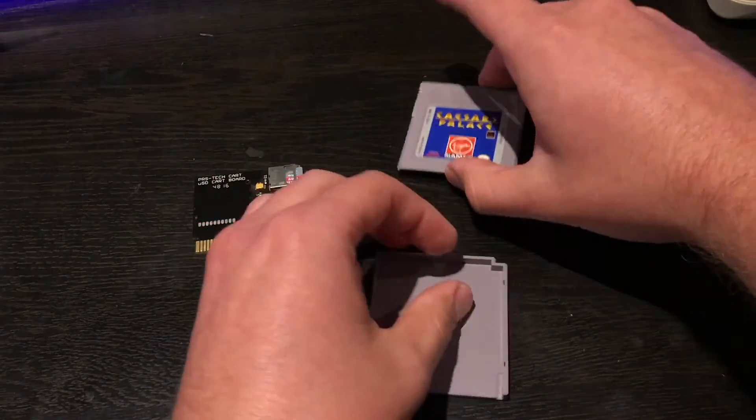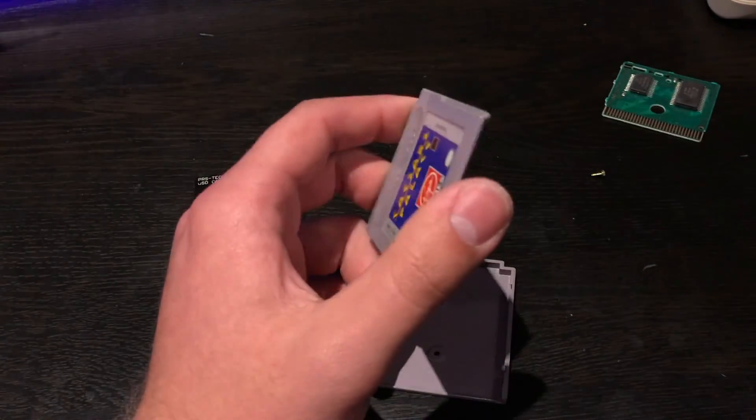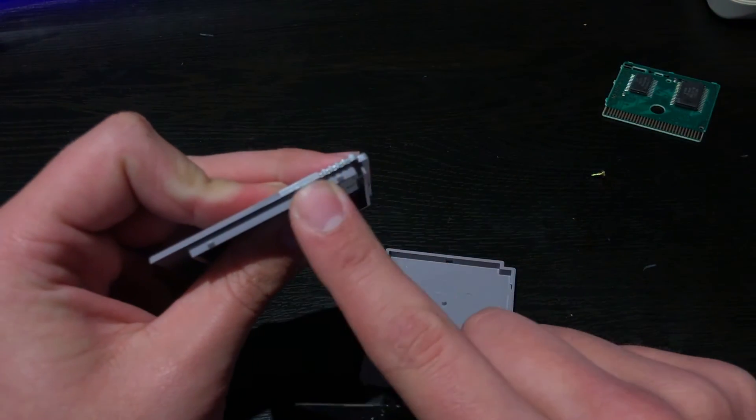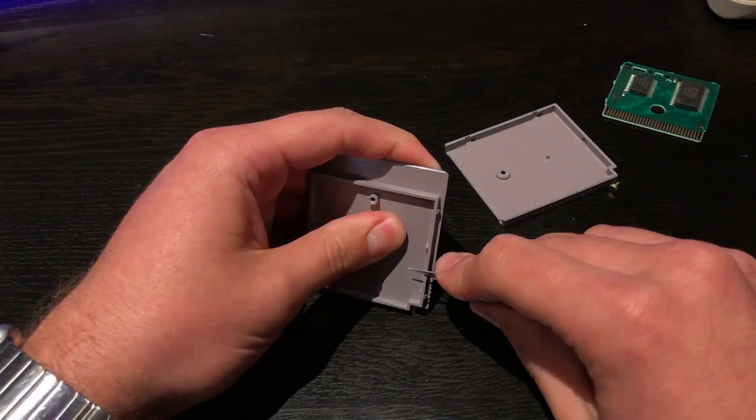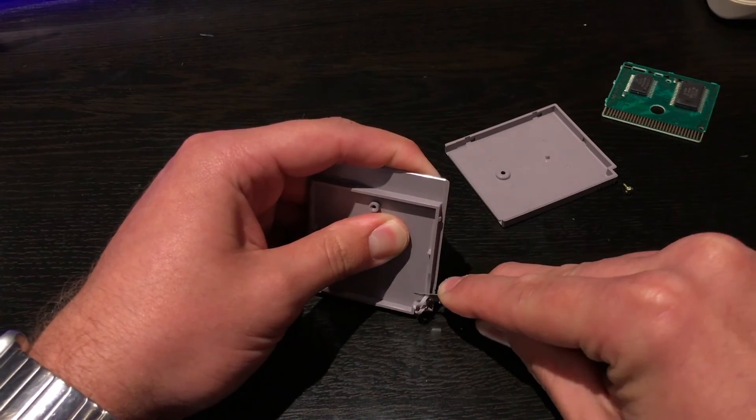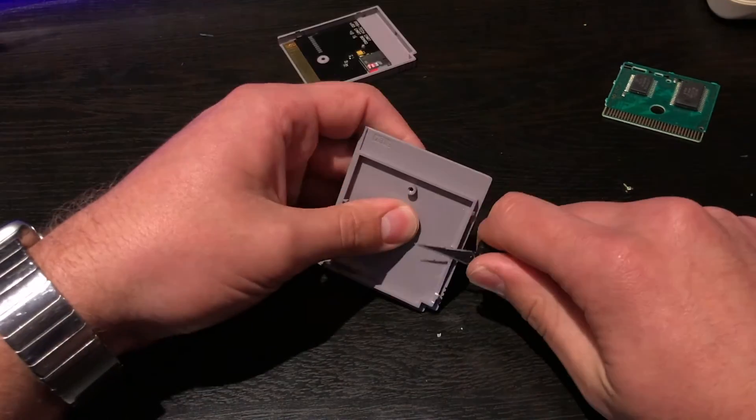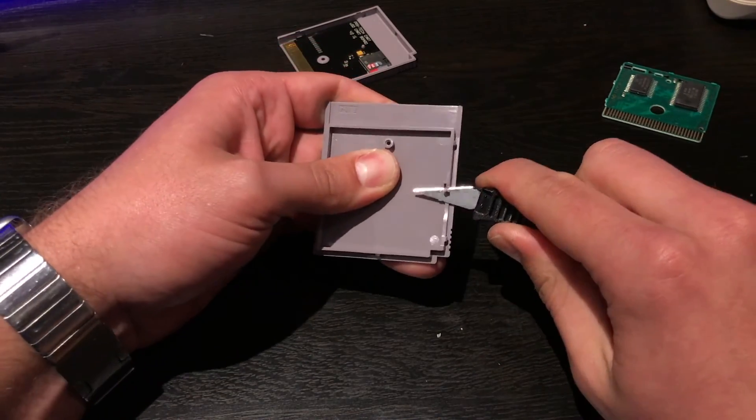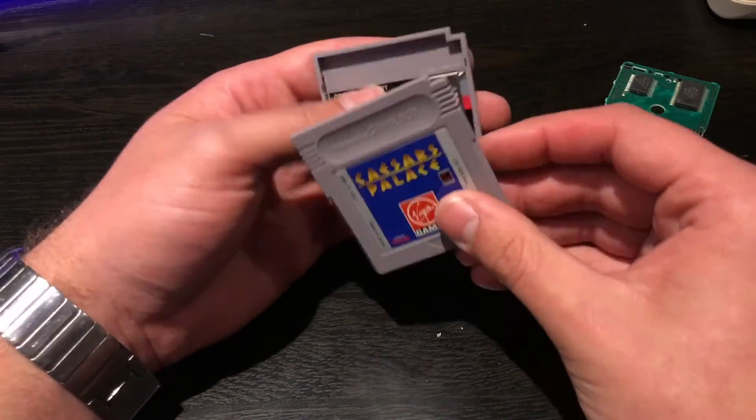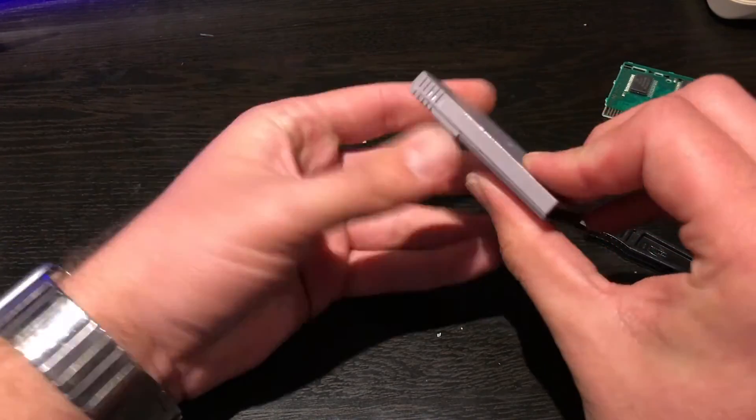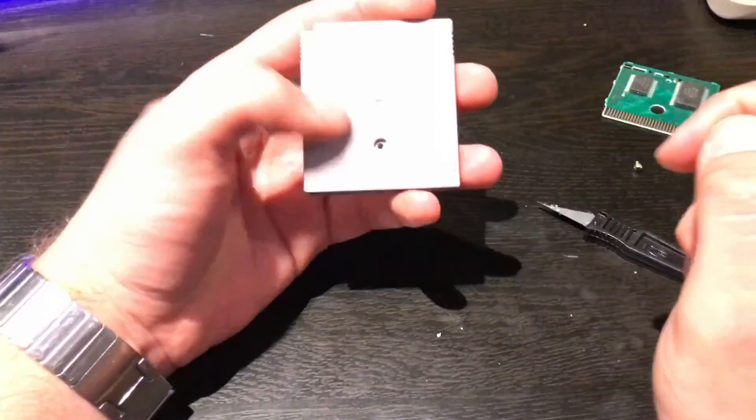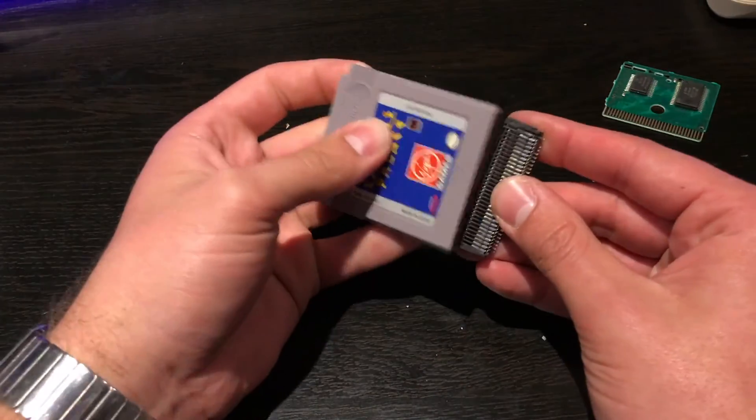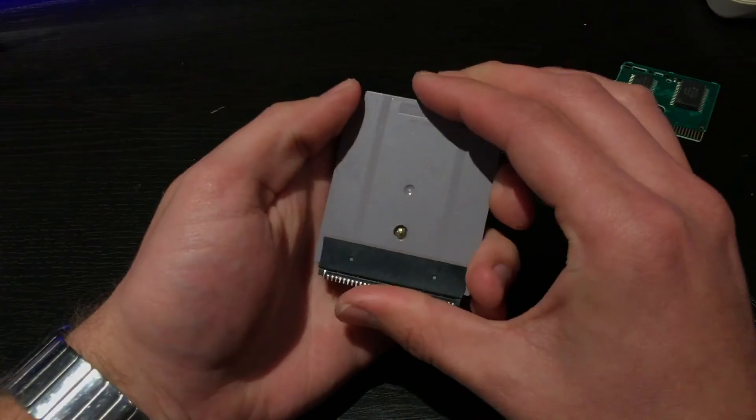Now we're going to have to do one modification to this case to actually let it fit with this memory card in there. And that is we need to grind this little section off right here. Once you have it grinded down far enough, you can see it clears the SD card down and you can slide it up. Now the last thing you got to do is just stick the screw in and you're all finished. There you have it. The cartridge is all finished up with the SD card inside of it. It also fits inside of our DS Lite cartridge slot.